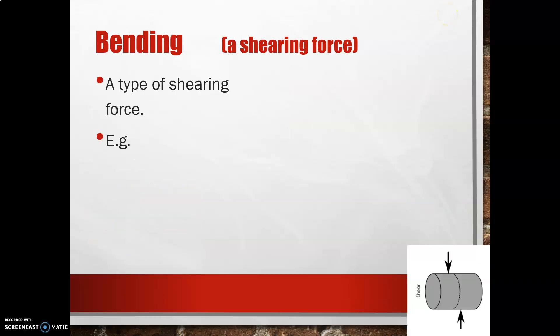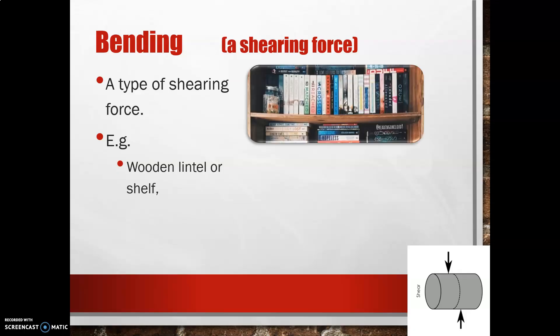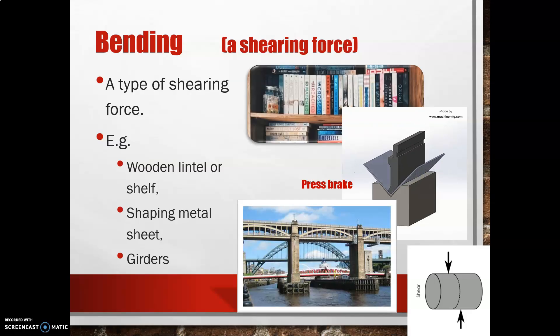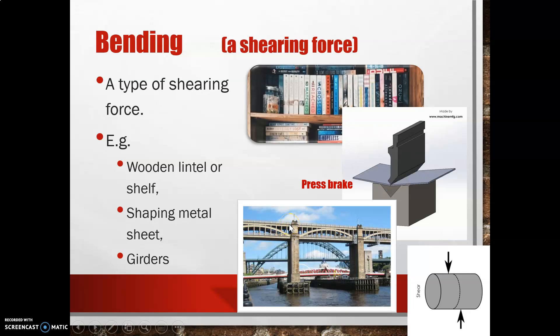Now we're going to discuss bending, which can get a little confusing. It is a type of shearing force because we have two parts that are trying to move past one another — except in this case they're not actually cutting past each other, they're just bending the material. Examples include wooden lintels or shelves — you probably have a shelf at home starting to bow under the weight of books. We can also shape metal sheet this way with a press brake. And girders — trying to hold up the weight off the road — experience that shearing force between the pylons and the girders.